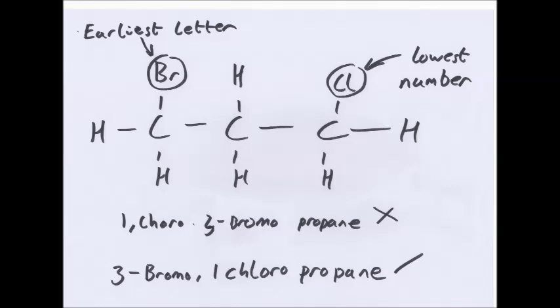So, the rules. The most reactive halogen gets the lowest number. And the halogen with the first letter, or the earliest letter in the alphabet, gets the first space in the name.